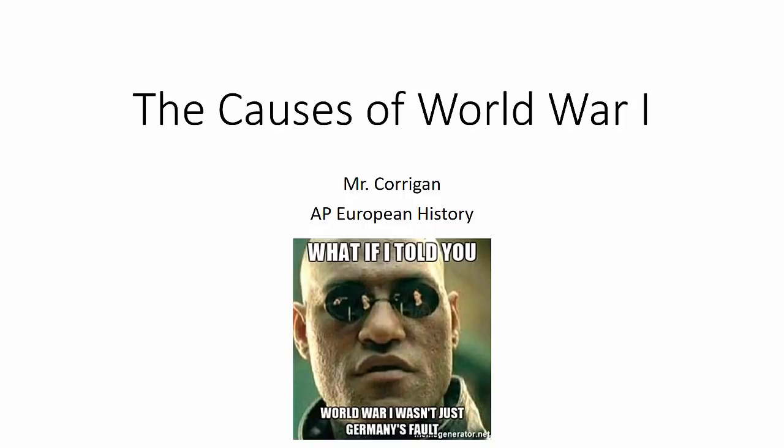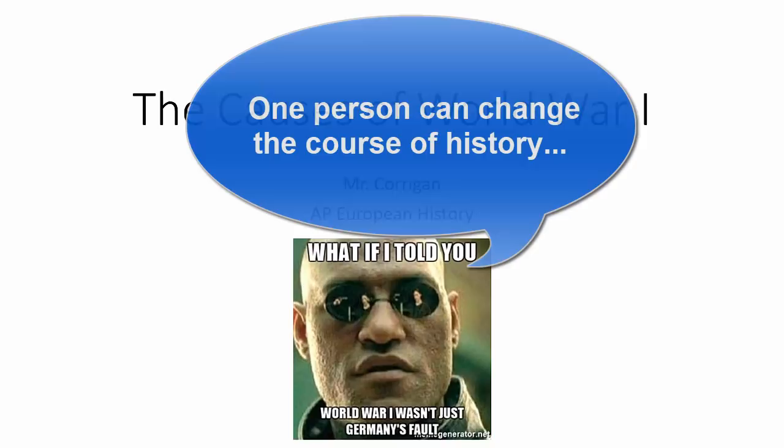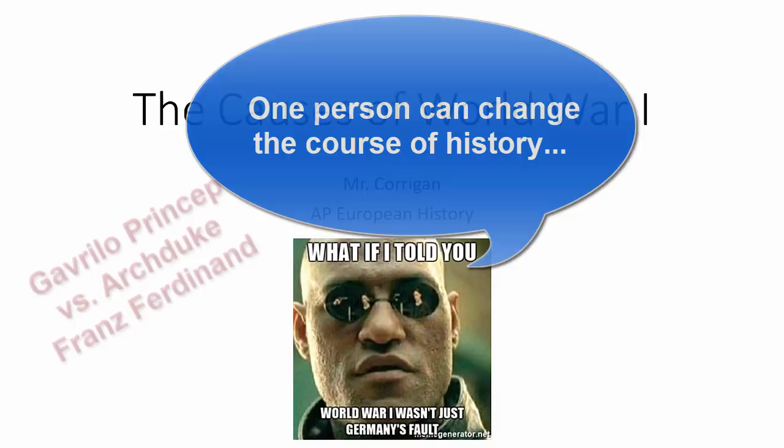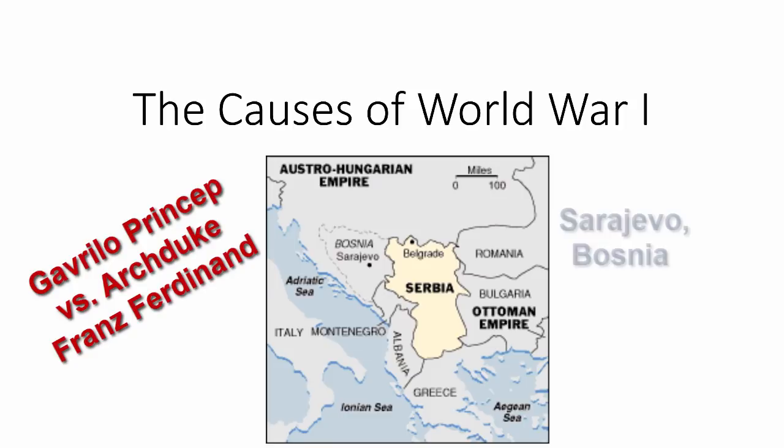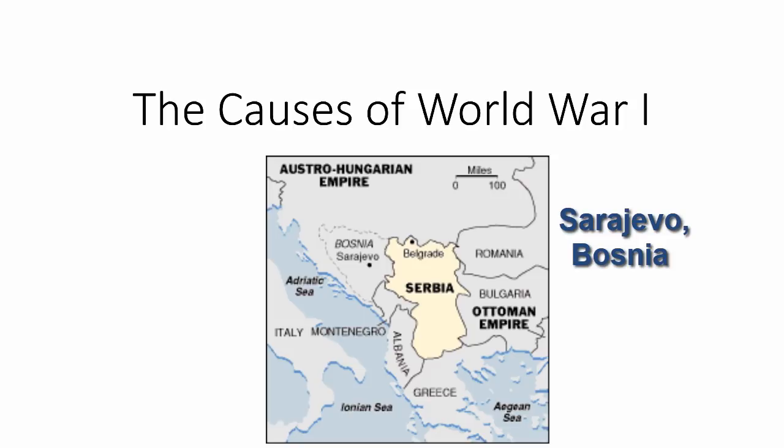Notable podcaster Dan Carlin points to the lead-up to the First World War as one of those times when one person changes the course of history, and in many ways he's right. On June 28, 1914, Gavrilo Princip shot the heir to the Austrian throne, Archduke Franz Ferdinand, in Sarajevo, Bosnia. A month later, what will be known as the Great War and later World War I began.